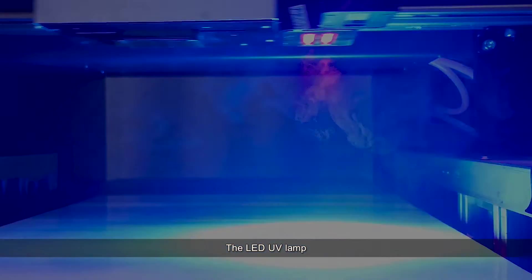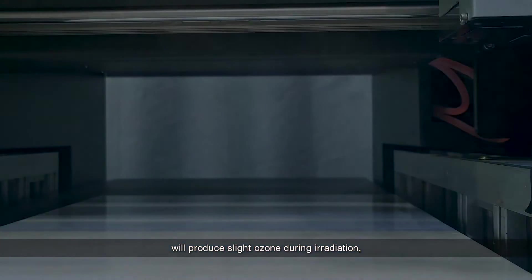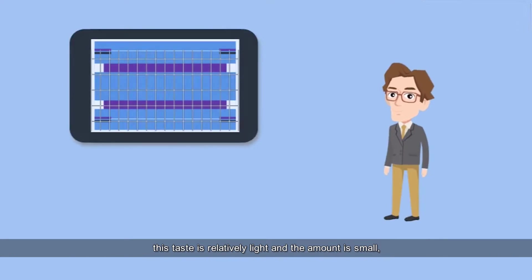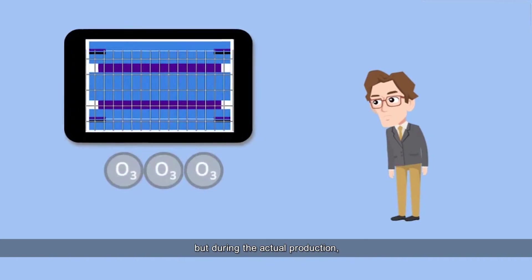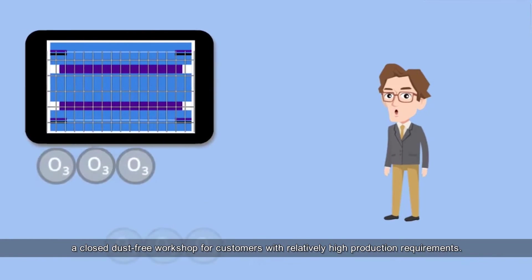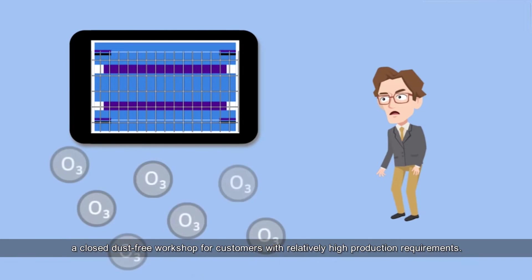The LED UV lamp would produce slight ozone during irradiation. This taste is relatively light and the amount is small. But during actual production, the UV printer adopts a closed dust-free workshop for customers with relatively high production requirements.